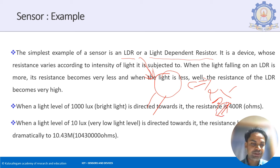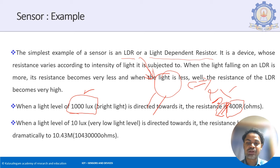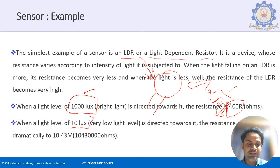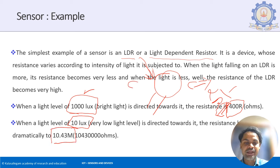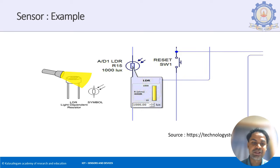In this example, at 1000 lux of luminescence — very bright light — you can see the resistance is very low. But when there is very little light falling on the sensor, the resistance increases. So when there is high light, resistance decreases; when there is low light, resistance increases.